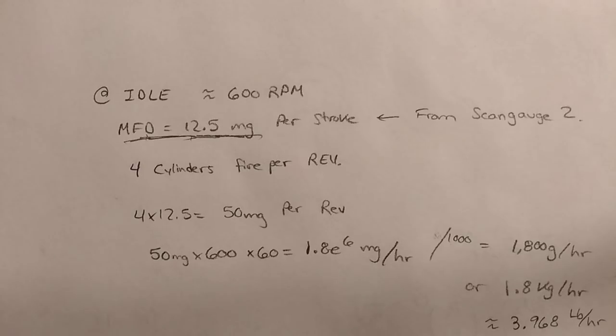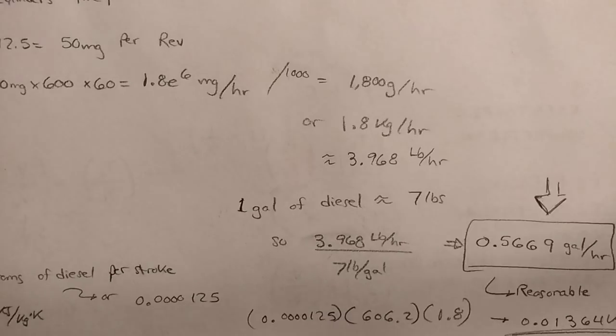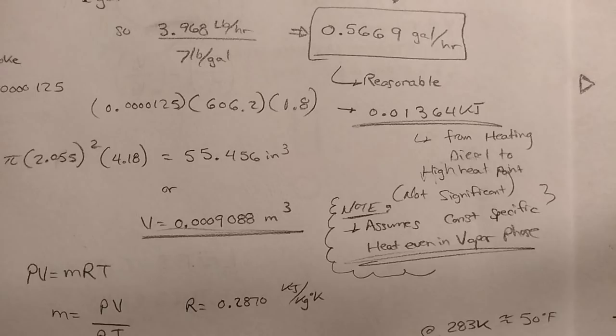To find out, I started by gathering some data on my 7.3. I figured out from my scan gauge, too, what the approximate fuel consumption was at idle. Translated that into a fuel consumption per hour that seemed reasonable, and I also made some generous assumptions.